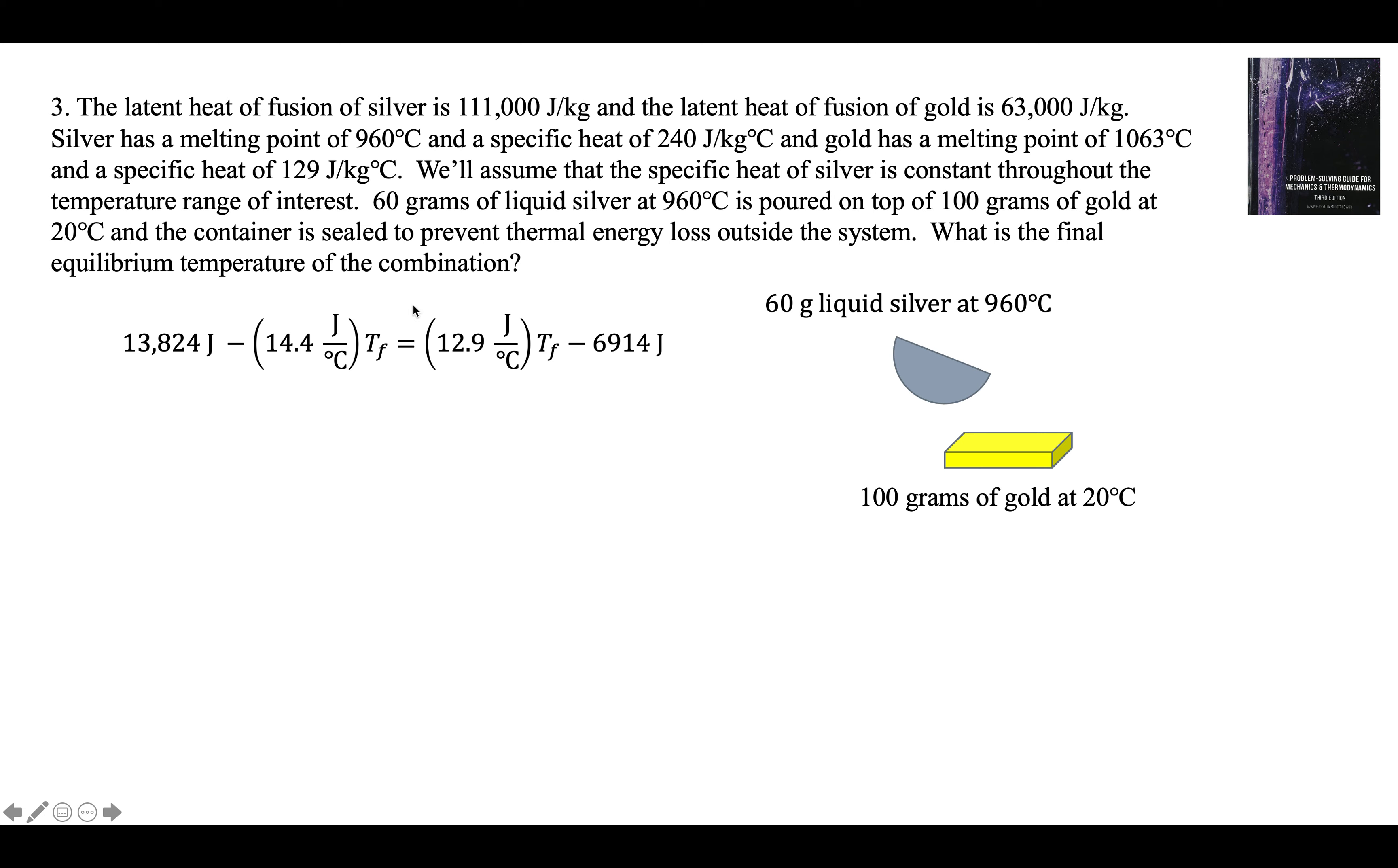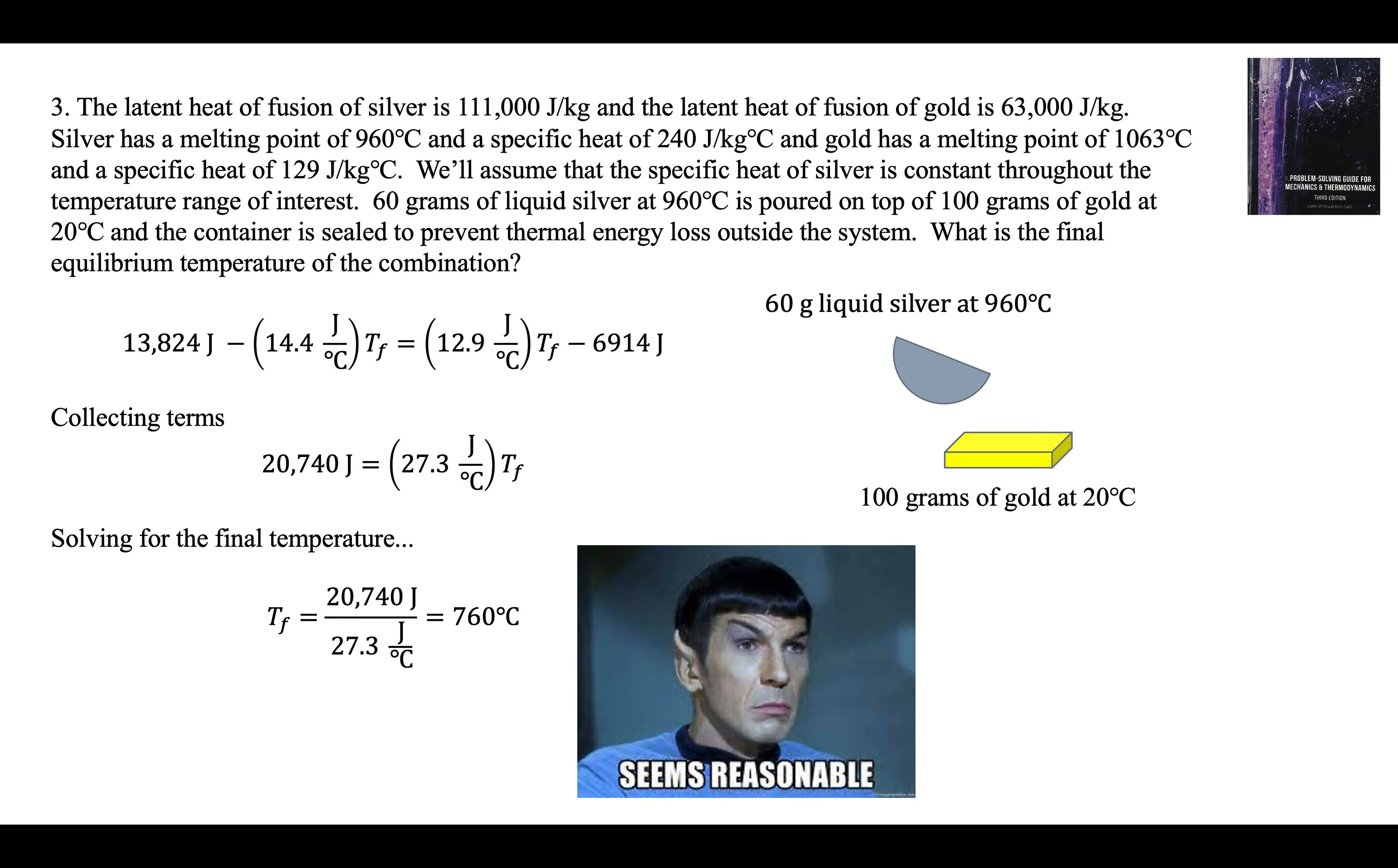And we get this. We divide both sides by 27.3 joules per degree Celsius to get T final. And we got the right units. The joules cancel. Looks pretty good. I'm happy with that. Seems reasonable. That's problem three.